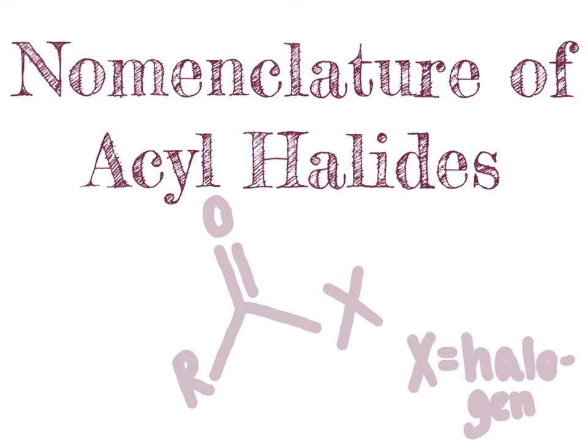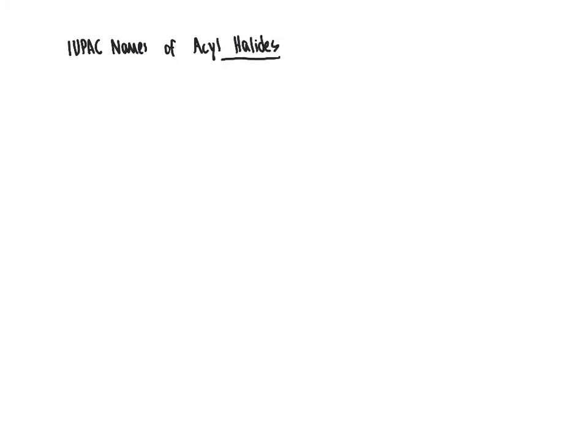By the end of this video, you should be able to look at a molecule that has an acyl halide functional group in combination with other functional groups such as halogens, ether groups, etc., and determine the IUPAC name for that acyl halide. For those of you that recall how to name carboxylic acids from our last unit, naming acyl halides will be very, very similar. We're going to base our discussion of IUPAC nomenclature of acyl halides on what we learned previously about naming carboxylic acids.